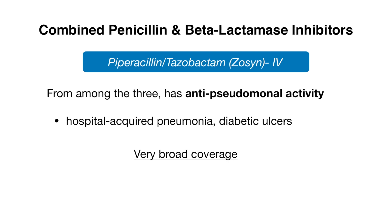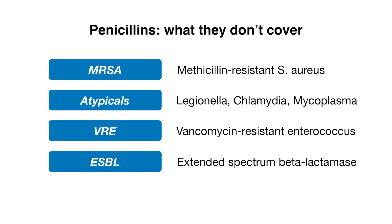Given Zosyn's broad coverage, it's easier to remember what it doesn't cover — and this applies to all penicillins as well. This includes MRSA (methicillin-resistant Staph aureus), atypicals such as Legionella, Chlamydia, and Mycoplasma, VRE (vancomycin-resistant enterococcus), and ESBL organisms, which stands for extended-spectrum beta-lactamase-producing organisms. Different antibiotics cover these organisms — let us know in the comments if you'd like a video on that.